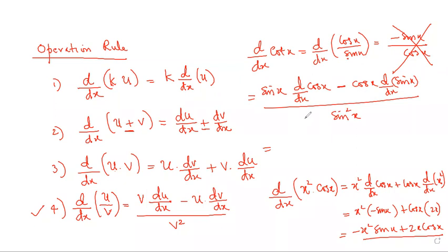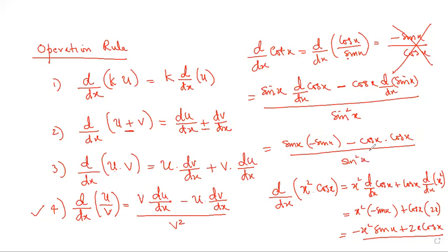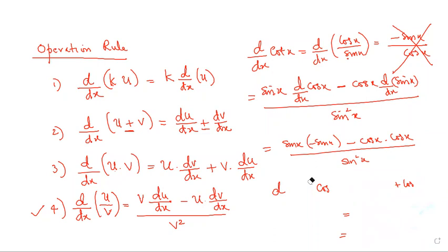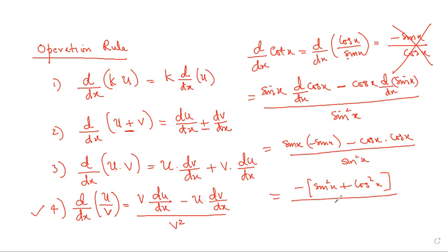Applying the quotient rule to cot(x) = cos(x)/sin(x): sin(x)·(−sin x) − cos(x)·cos(x), all over sin²(x). This gives −sin²(x) − cos²(x) over sin²(x), which equals −(sin²x + cos²x)/sin²(x) = −1/sin²(x) = −cosec²(x). So the derivative of cot(x) is −cosec²(x).